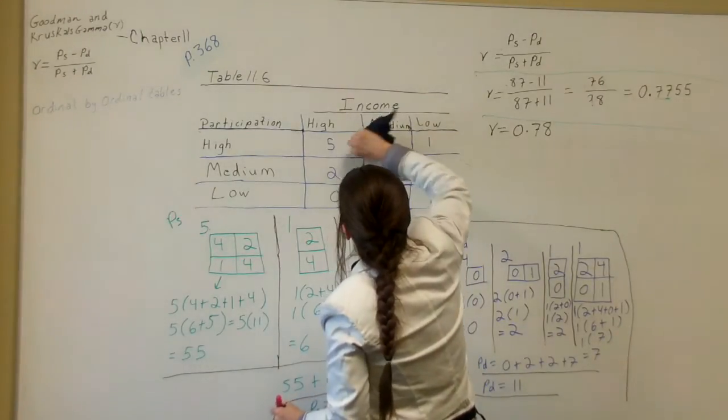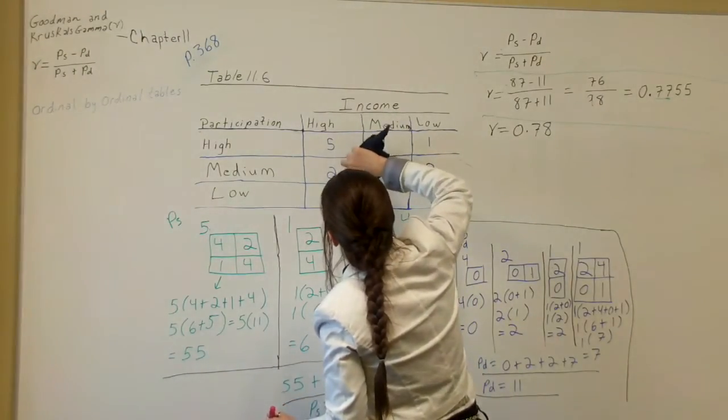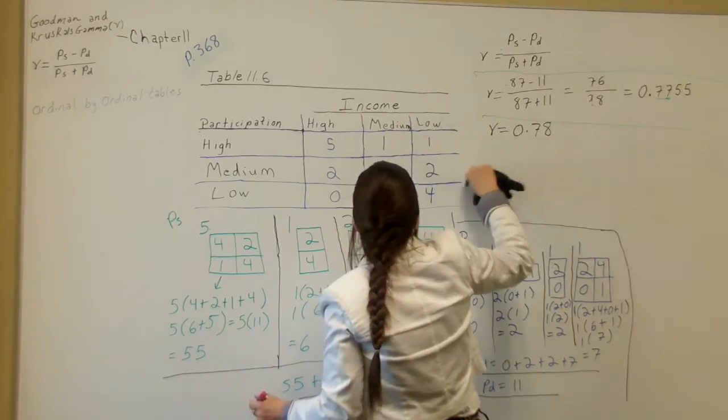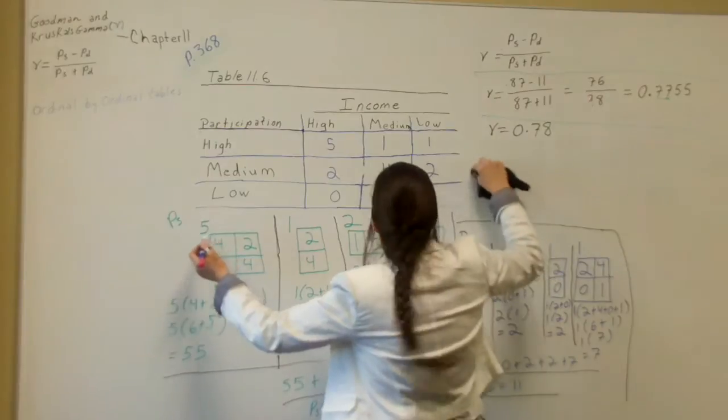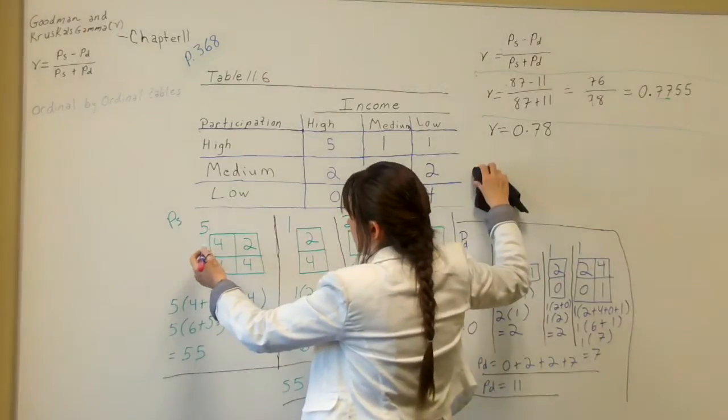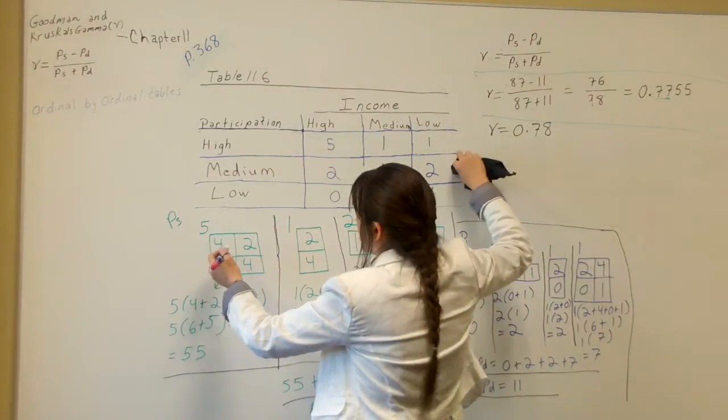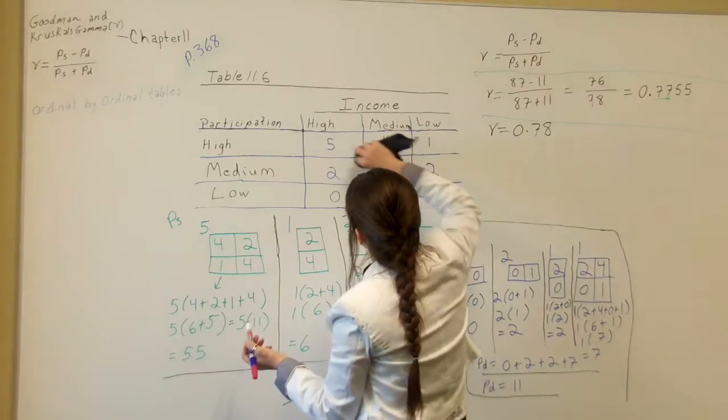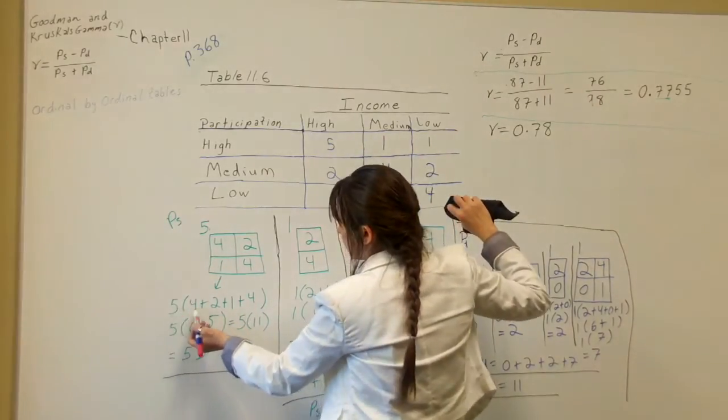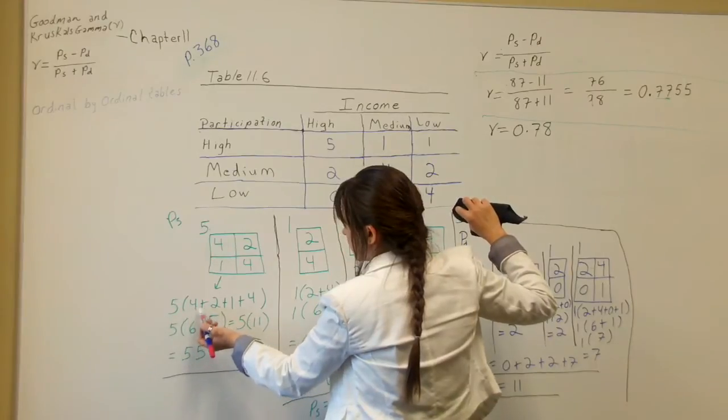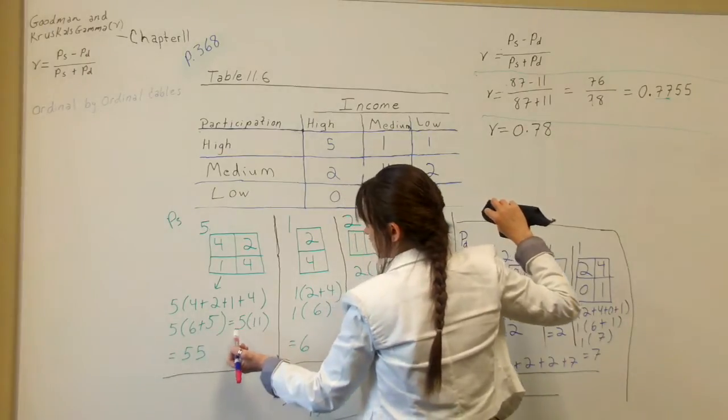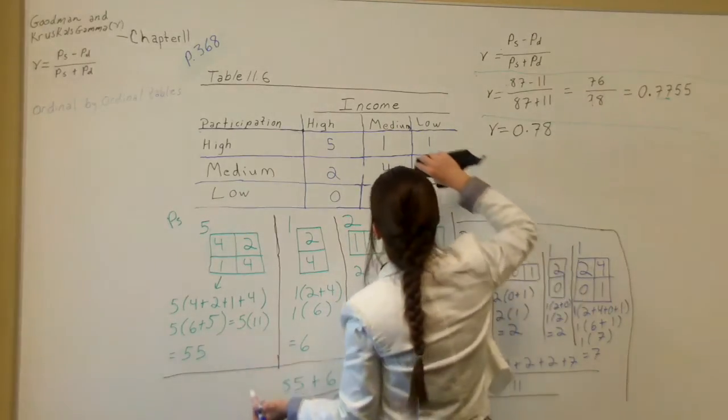So now that we know how they got the numbers for the boxes, now we're going to figure out how to calculate them. How you calculate them here is the 5. You have 5 times 4 plus 2 plus 1 plus 4. First I go 4 plus 2 equals 6. 1 plus 4 equals 5. And then 6 plus 5 equals 11. So 5 times 11 equals 55.